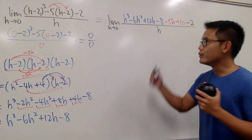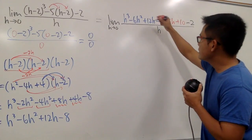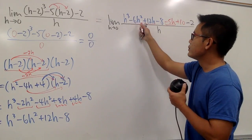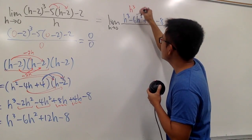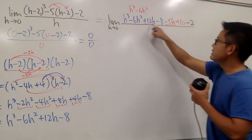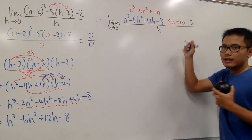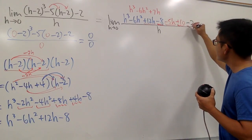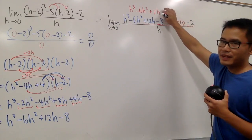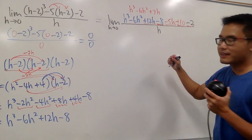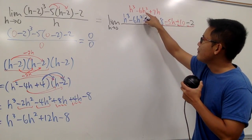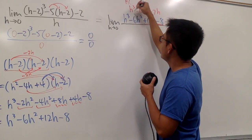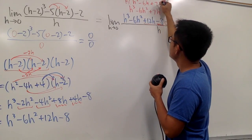Let's see if there's anything we can combine on the top. We have 12h and negative 5h, so we can combine terms. The h cubed and minus 6h squared stay. 12h and negative 5h gives us plus 7h. For the constants: negative 8 plus 10 is positive 2, and then minus 2 gives us 0 — so no more constant terms. Every term on top has an h factor, so we can factor out h, giving us h times (h squared minus 6h plus 7).